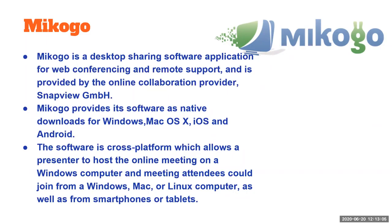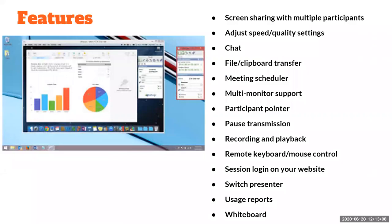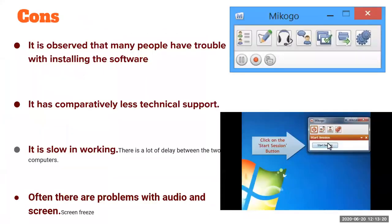Mikogo has almost all features of the other major conference platforms. The disadvantage is that there is some trouble in installing the software. It has comparatively less technical support — if you have a problem, you may not get the kind of support you get in Google Meet, Zoom, or Blue Button. There are also occasional problems with audio and video.